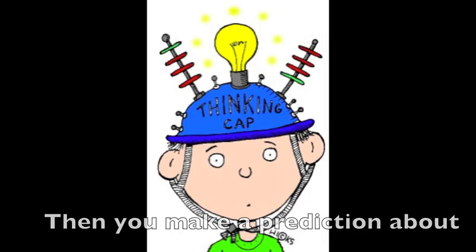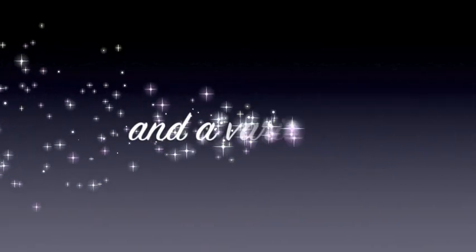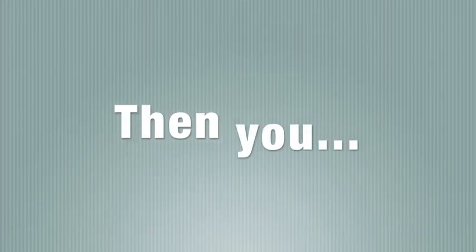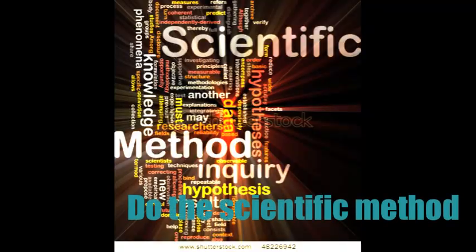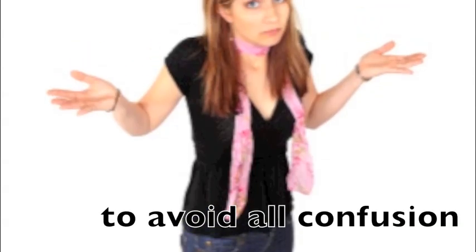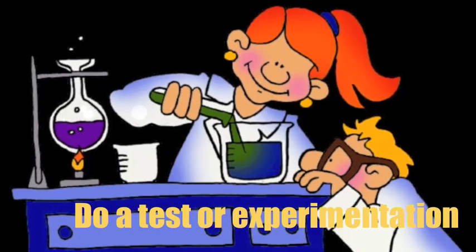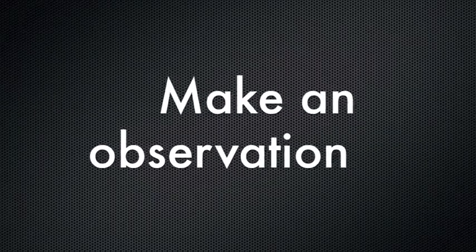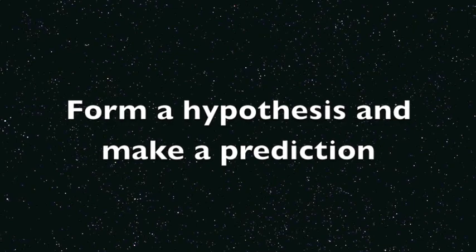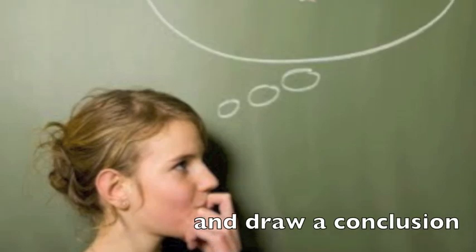Then you form a hypothesis to explain what you observe. Then you make a prediction about how it's gonna go. Do a test with a control and a variable. Then you analyze the data and draw a conclusion. Do the scientific method to avoid all confusion. Make an observation, ask a question, form a hypothesis and make a prediction. Do a test or experimentation, analyze data and draw a conclusion.